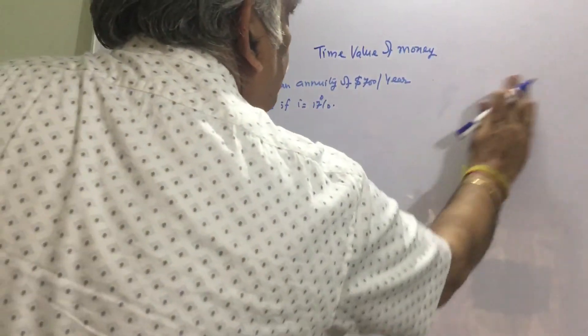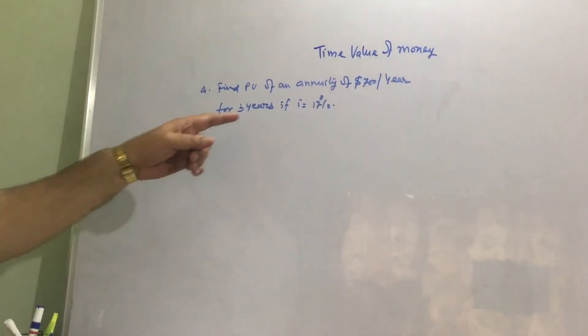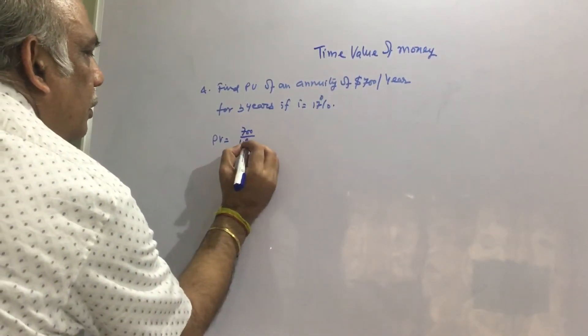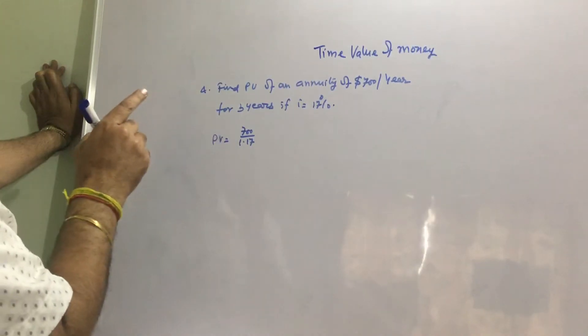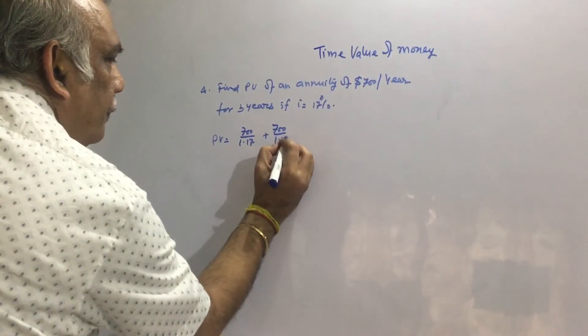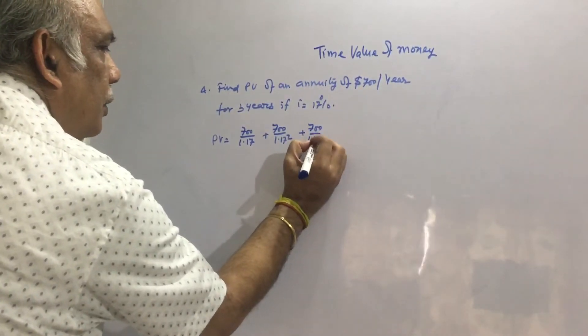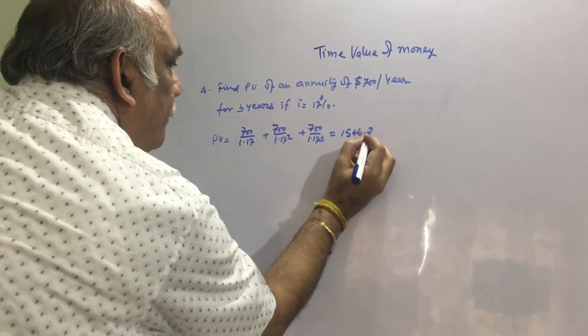If i equals 17%. See here, this annuity is only for 3 years, so we can calculate this present value by using the direct method. See, after 1 year we are getting $700, after 2nd year again we are getting $700, after 3rd year we are getting $700. So present value we can write as 700 divided by 1.17 plus 700 divided by 1.17 squared plus 700 divided by 1.17 cubed. If we calculate it, we get $1,546.71.